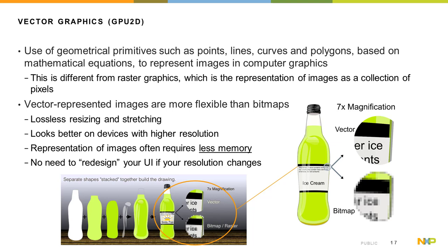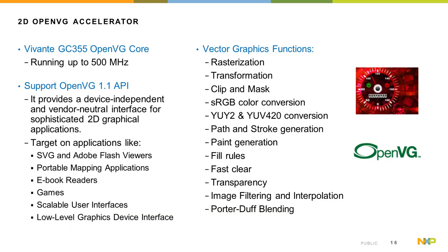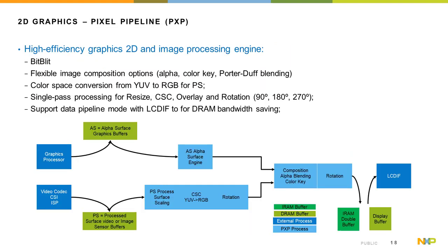For example, you can keep all the same branded assets, images, and icons that you would use on a smartphone companion app as used on your smart home device display. The 2D GPU core consists of an Vivante GC355 OpenVG core running up to 528 MHz, and includes support for OpenVG as well as typical vector graphics functions such as rasterization, transformation, color conversion, path and stroke generation, paint rules, transparency, and Porter-Duff blending. The device also includes a 2D graphics pixel pipeline engine, which is a high efficiency graphics 2D and image processing engine capable of performing bitblit, image composition, color space conversion, single pass processing for overlays, rotations and resizing, and a data pipeline mode used in conjunction with the LCD interface for memory bandwidth savings.